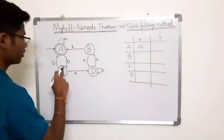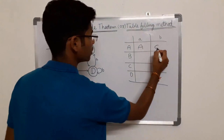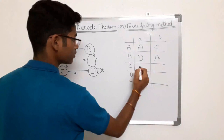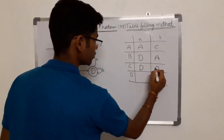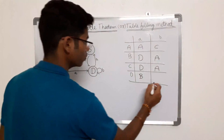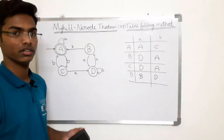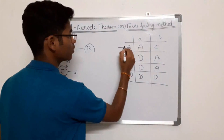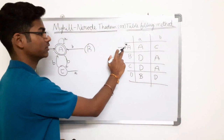Looking at our DFA: A on input A goes to A, A on input B goes to C, B on input A goes to D, B on input B goes to A, C on input B goes to A, D on input A goes to B, and D on input B goes to D. This is our transition table. The initial state and final state are both A — the arrow mark represents the initial state and the star represents the final state.